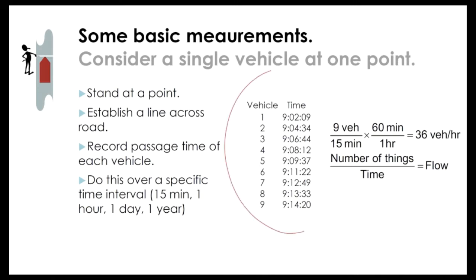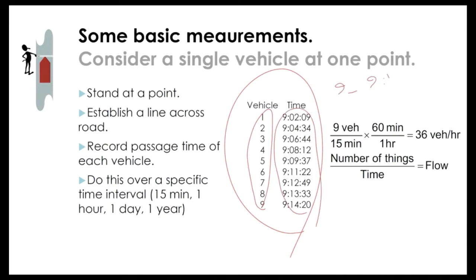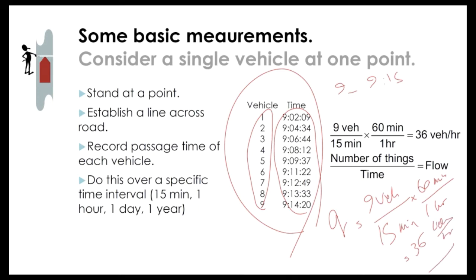From this passage record data, we can calculate flow. We recorded nine vehicles passing from time 9:00 to 9:15 — that's 15 minutes. So flow is nine vehicles over 15 minutes, which multiplied by 60 minutes per hour equals 36 vehicles per hour. As long as you have passage record data, you can calculate flow from it.